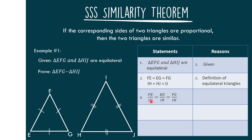Statement number 3: We can state that FG over HI is equal to FG over IH, is equal to FG over IJ, by the multiplication property.